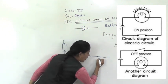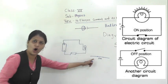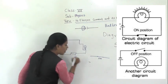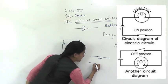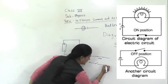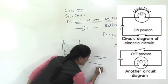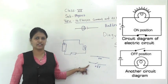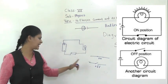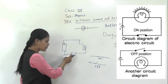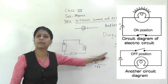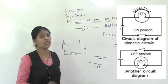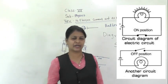This is the on switch. And if you want to show the switch is off, we draw it like this line — this is the off switch. When the switch is on, the bulb will glow. And when the switch is off, the bulb will not glow.